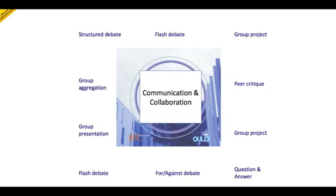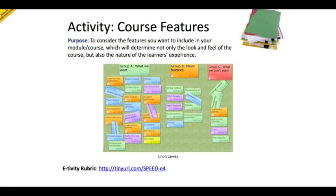Collaboration and communication might include students working on a group project together, peer critiquing of resources, a for-and-against debate, or a group presentation. Here's a snapshot of the course features pack which you can develop in the Linoit tool, and for each of these examples there's a link to the e-tivity rubric that gives you more detail of what you need to do. You'll be engaging in this activity during this week's activities on the MOOC.